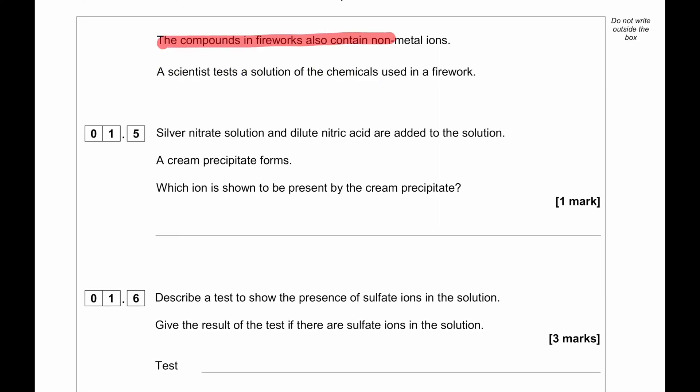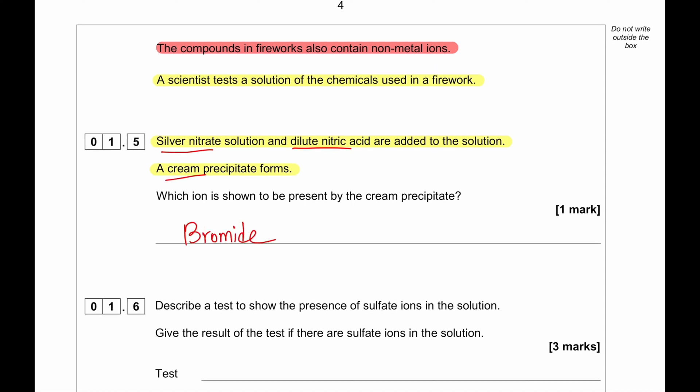The compounds in a firework contain non-metal ions. A scientist tests a solution of chemicals used in a firework. Silver nitrate solution and dilute nitric acid are added to the solution. A cream precipitate forms. When we add silver nitrate along with dilute nitric acid and a cream precipitate forms, it indicates the presence of bromide ions.